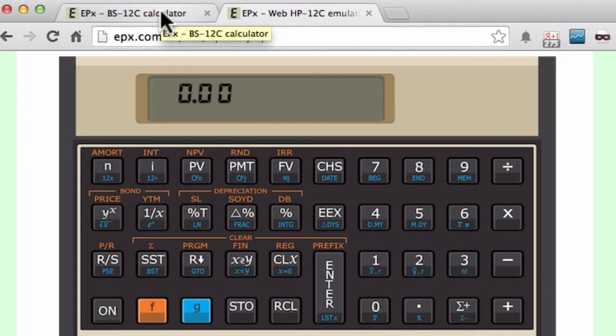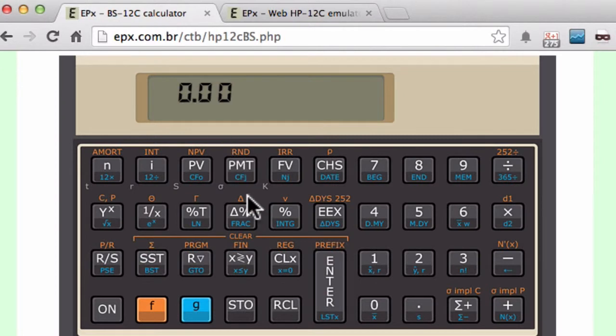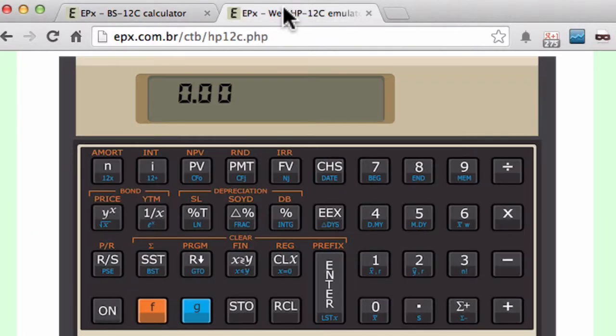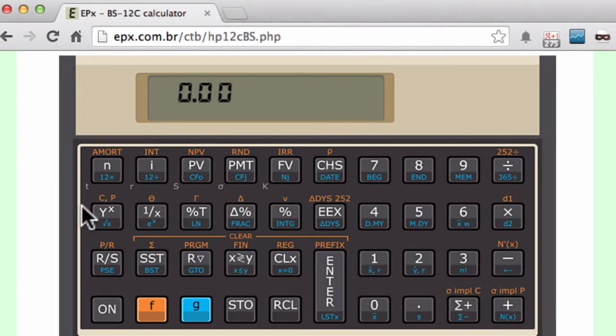As you can see, it has a bit different functions. Basically, the new version has functions that people seldom use, like bond and depreciation, removed in favor of other financial functions related to Black Scholes model that, in my opinion, are more useful nowadays. So this is kind of the financial calculator of my dreams. I put it together.